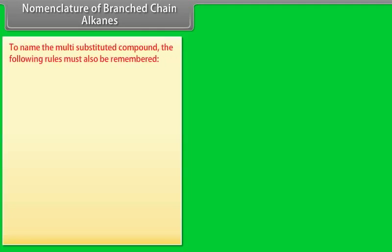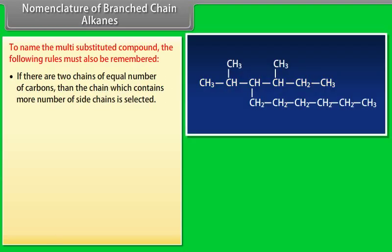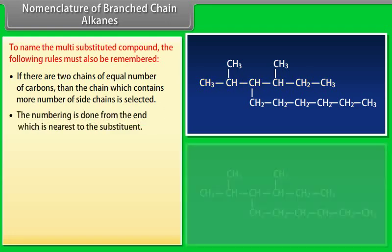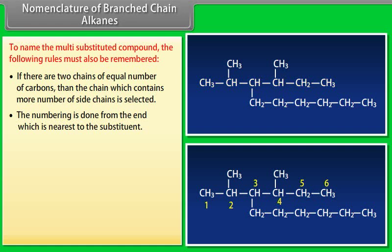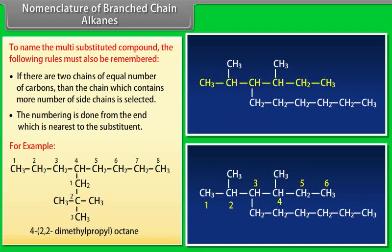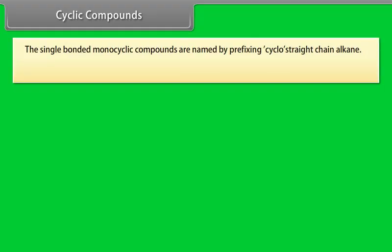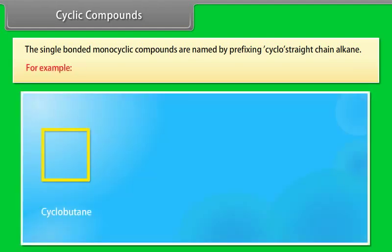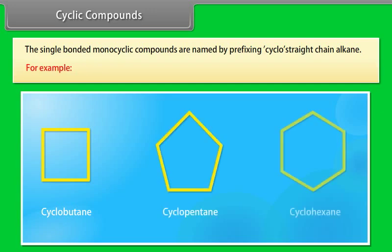To name multi-substituted compounds: if there are two chains of equal number of carbons, the chain which contains more side chains is selected. Numbering is done from the end nearest to the substituent. For example, the IUPAC name of the given compound is 4-(2,2-dimethylpropyl)octane. Single-bonded monocyclic compounds are named by prefixing cyclo- to the straight-chain alkane name. For example, cyclobutane, cyclopentane, cyclohexane.